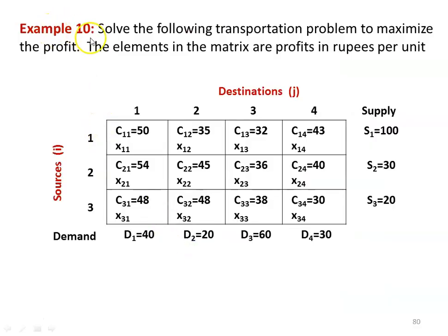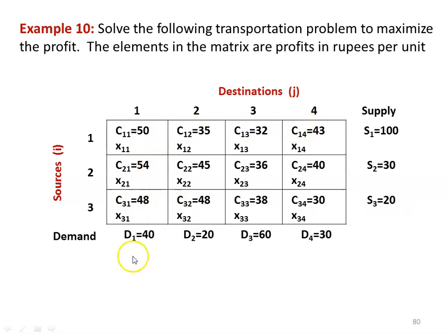Problem number 10, example 10: solve the following transportation problem to maximize the profit. The elements in the matrix are profit in rupees per unit. There are three sources with supply capacity S1 equal to 100, S2 equal to 30, and S3 equal to 20, and four destinations with demand D1 equal to 40, D2 equal to 20, D3 equal to 60, and D4 equal to 30. The unit costs given are the profit earned by transporting items from source to destination.